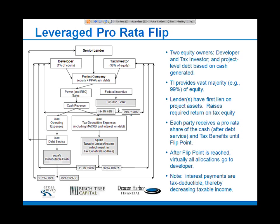In this structure, the developer generally isn't expected to put up a lot of equity — it can be as little as 1% of the equity required — while the tax investor puts up a much larger share. The lender has first lien on the project assets, which raises risk to the tax investor and is why a slightly higher yield is needed. After the flip point is reached, virtually all allocations go to the developer.